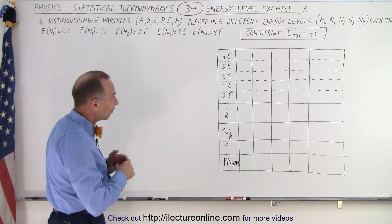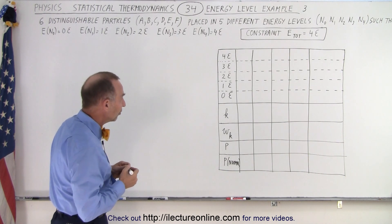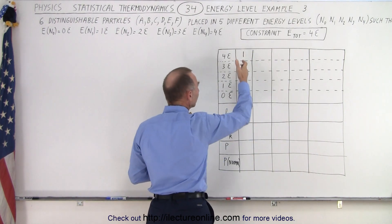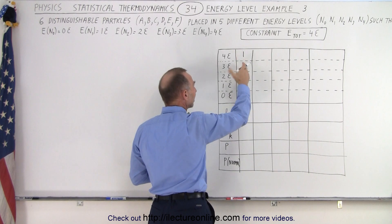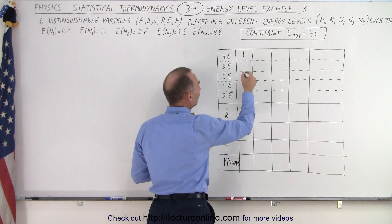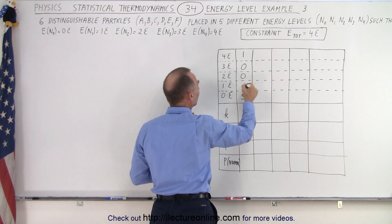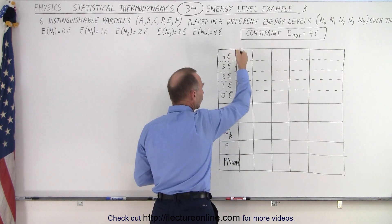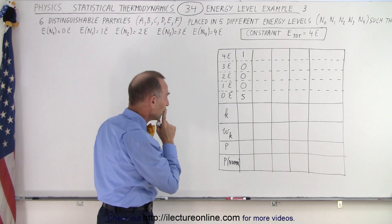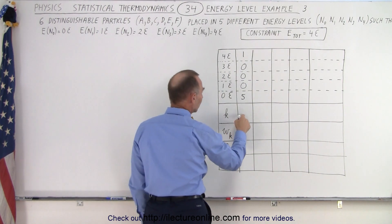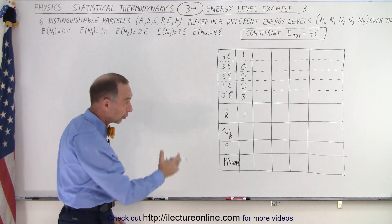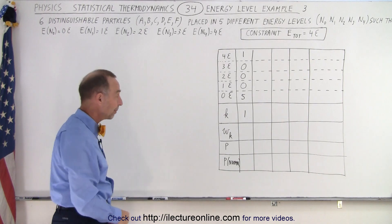With a total of four quantum energies, if we place one particle in the highest energy level, then we cannot put a particle in any other level that has energy. So the remaining five particles must go in the lowest level, meaning zero particles in the other three levels. Notice the total adds up to four quantum energies. That's our first macrostate.